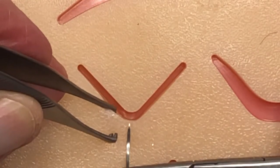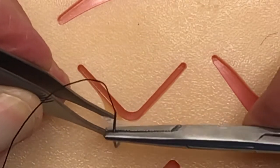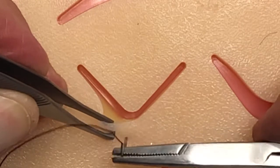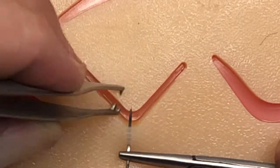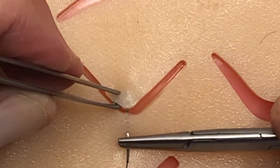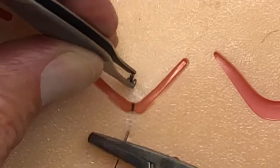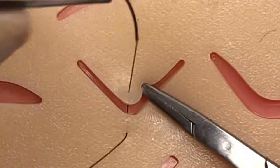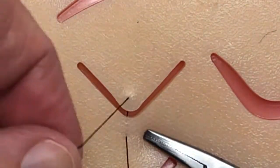So we're going to go in right here at the apex, coming in, trying to enter our tissue at 90 degrees, coming through, manipulate the tissue on the opposite side with your tissue forceps.